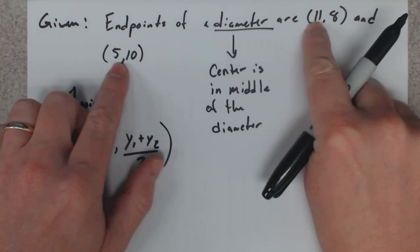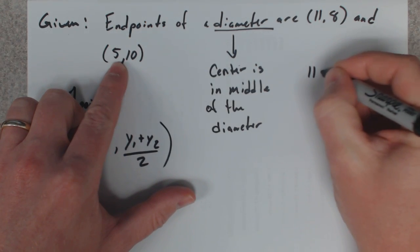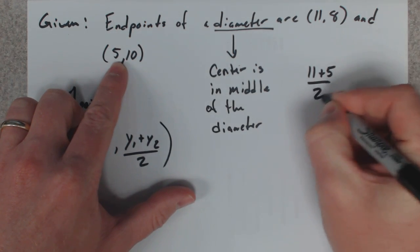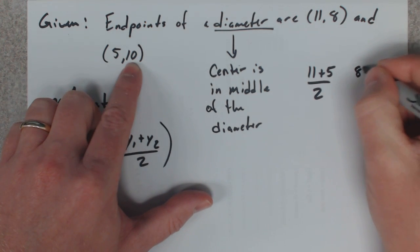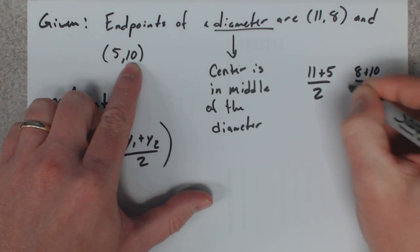So I'm going to take my x values of 11 and 5, divide it by 2. Take my y values of 8 and 10, divide those by 2.